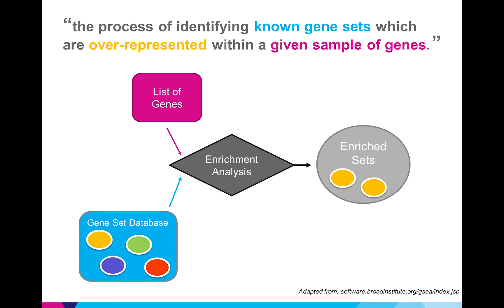So here's a more formal diagram. We have our input list of genes and the annotated gene set database and then what enrichment does is identify sets in that database which are overrepresented. So what we want to do is improve enrichment so that we can get better results.